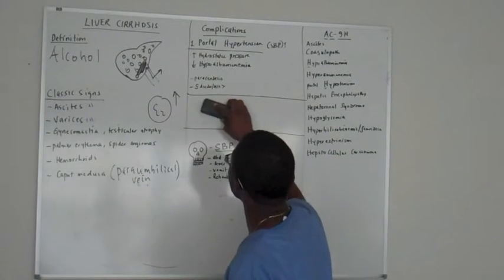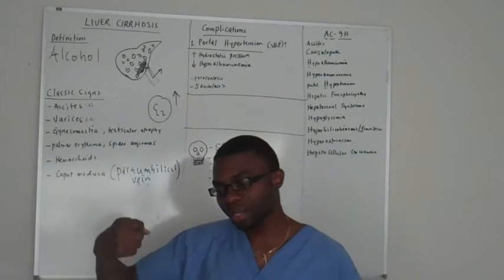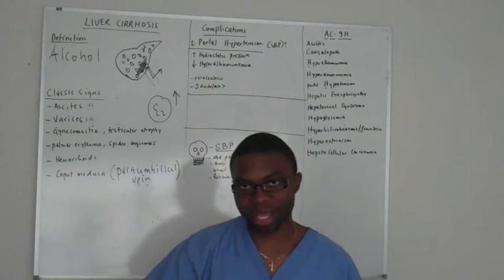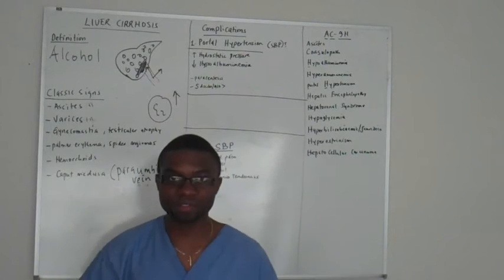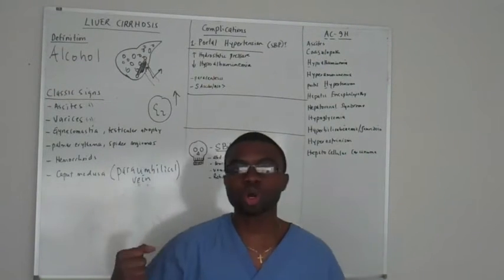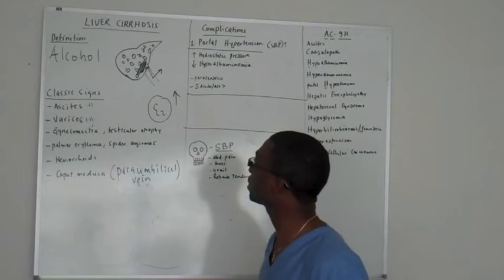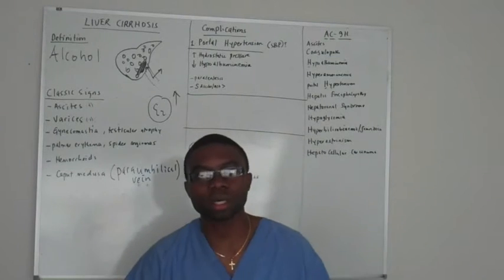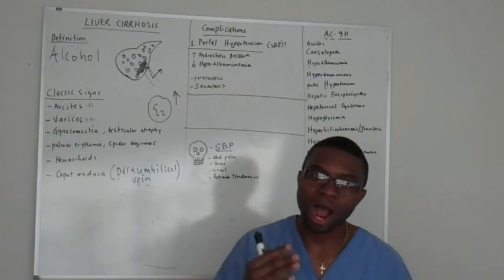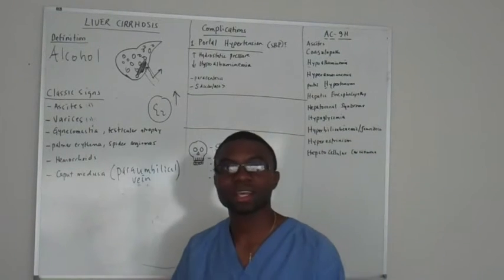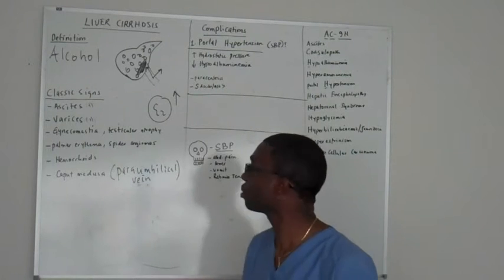You put a needle and you aspirate the ascites fluid — you draw it out. And you measure something called the serum ascites albumin ratio.